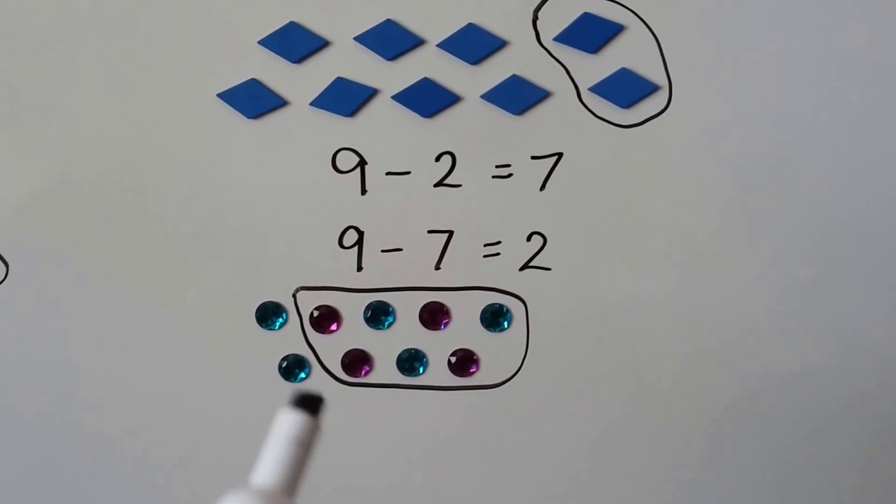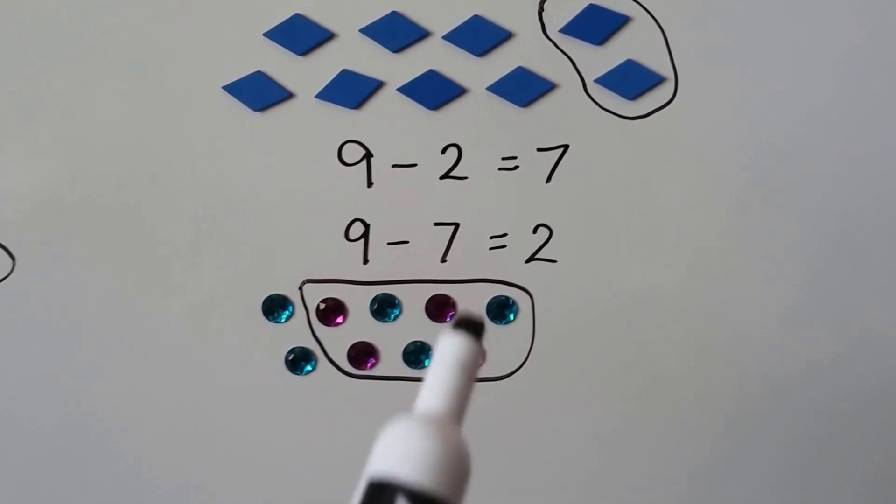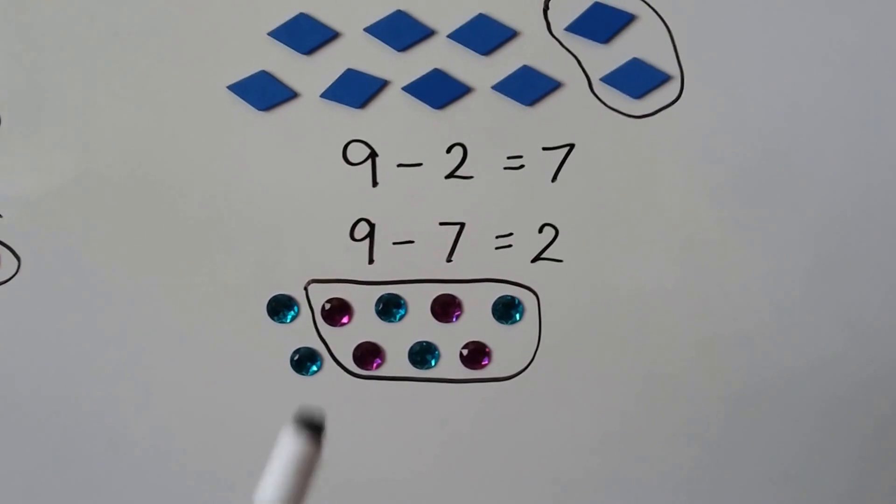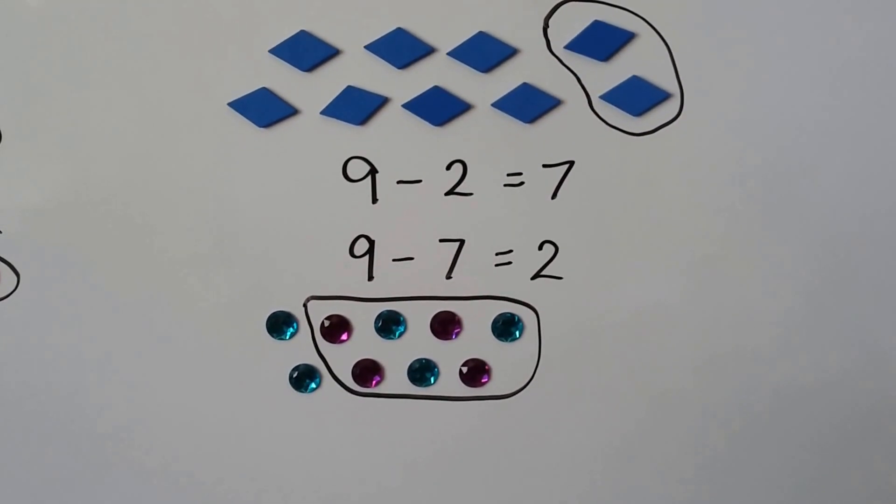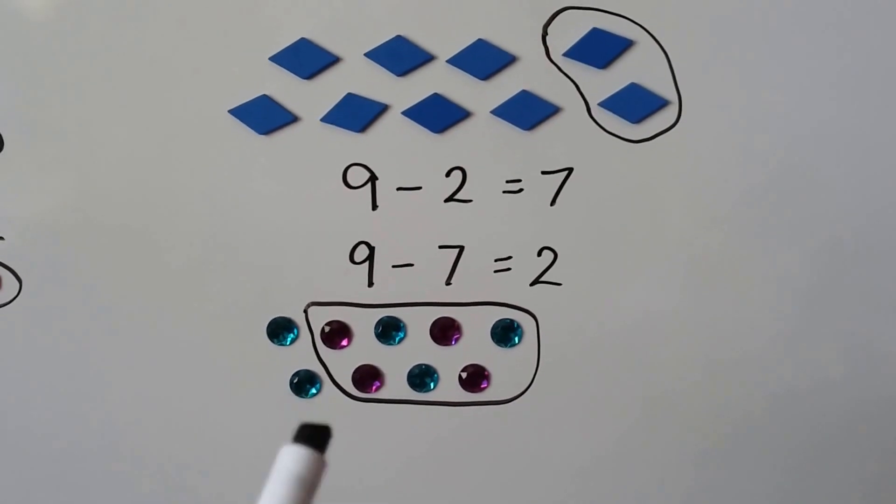If we have 9 gems and we take 7 of them away, we'll have 2 left. 9 minus 7 equals 2, and the difference between 9 and 7 is 2.